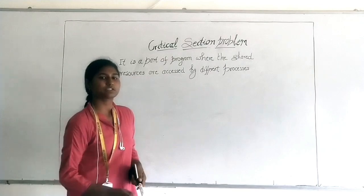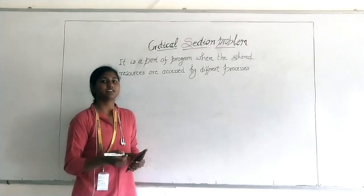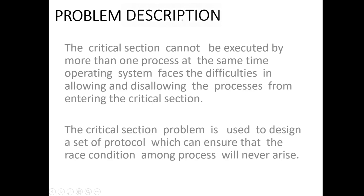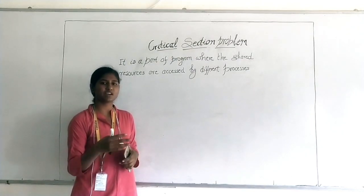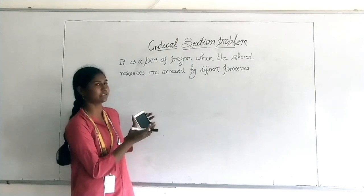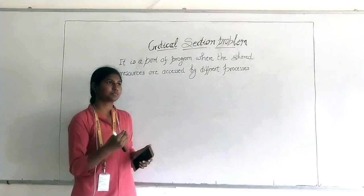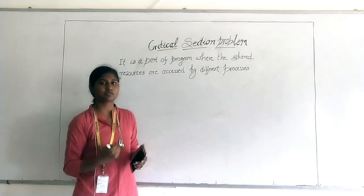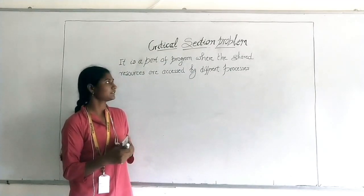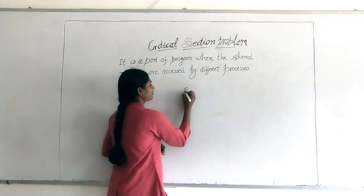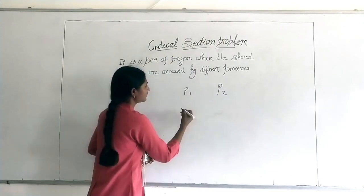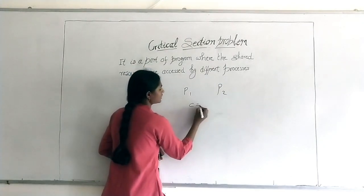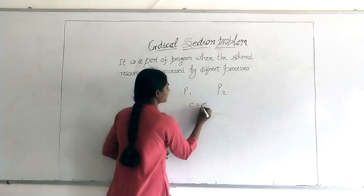So what is the critical section problem? The problem is that when we have more than one process — two processes, n number of processes — and they are going to use the same critical section, they have a problem: which process has to come first, which has to come after. For example, like P1 and P2, both want to use the same resource called C.